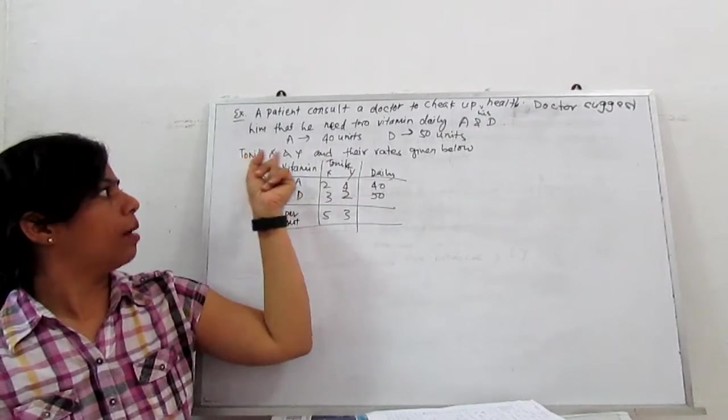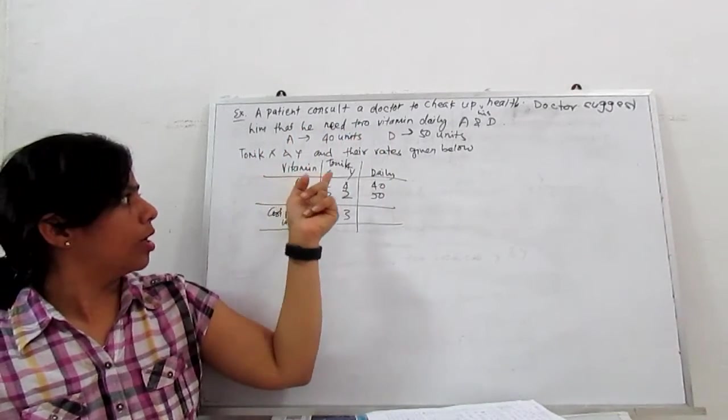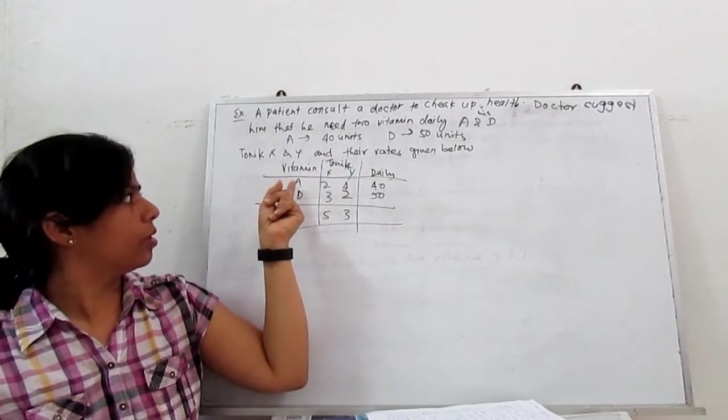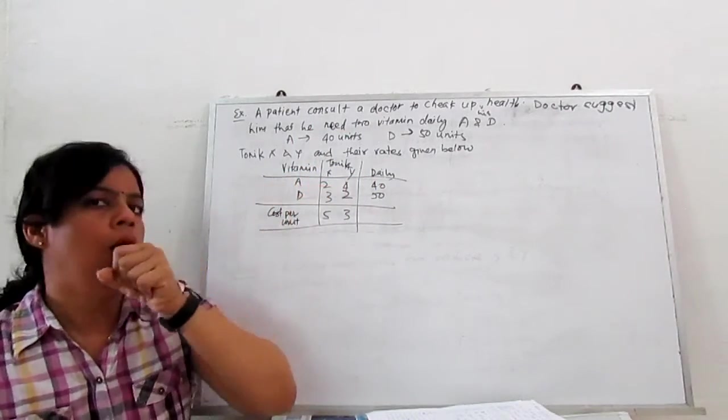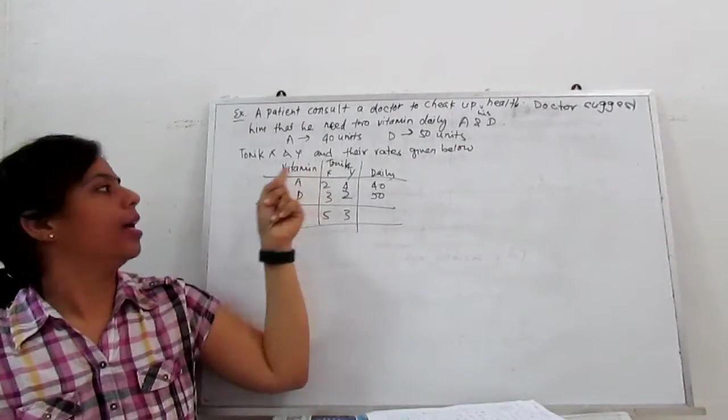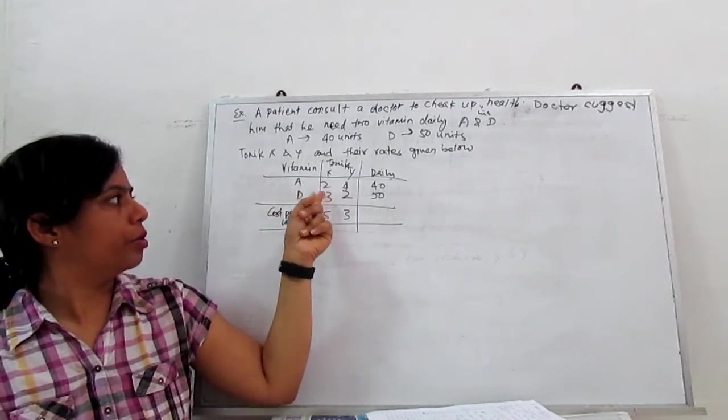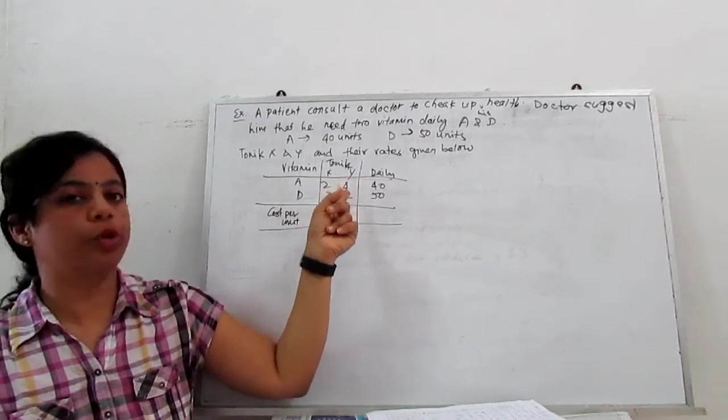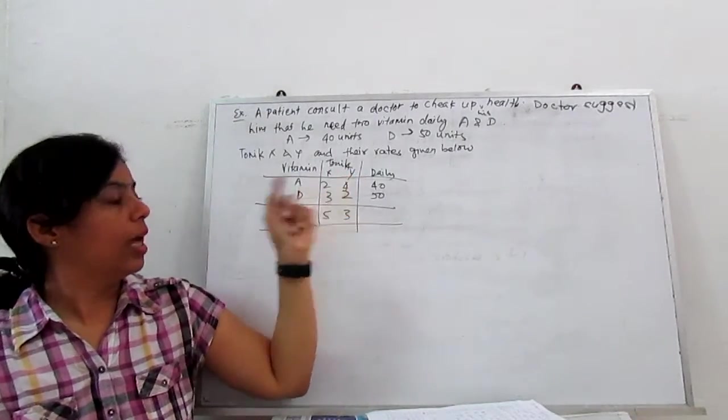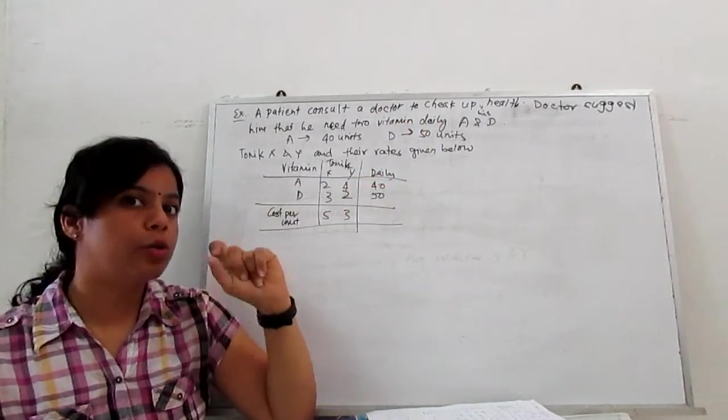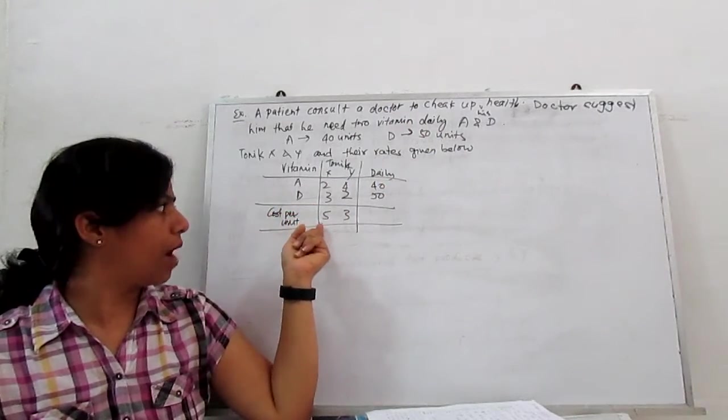There are two tonics which have vitamin A and D both. Tonics X and Y: In tonic X, vitamin A has 2 units, D has 3 units. For tonic Y, vitamin A has 4 units, D has 2 units. Daily needs for that man are 40 units of A and 50 units of D.